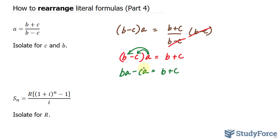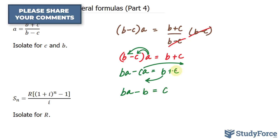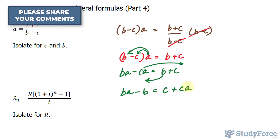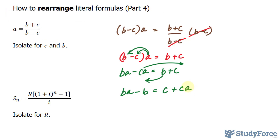I will bring this term over to that side and this b over. So right now we have b·a minus b is equal to c plus c·a. By bringing the two c's to one side, I can now common factor the c on the right side. Factoring out a c, I end up with c times one plus a, and the left side stays the way it is.